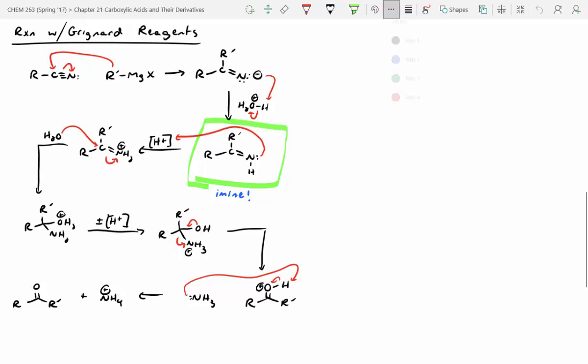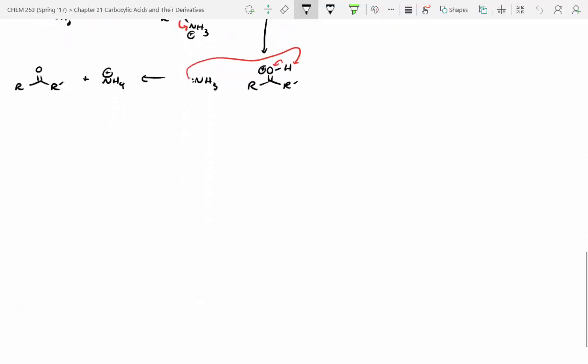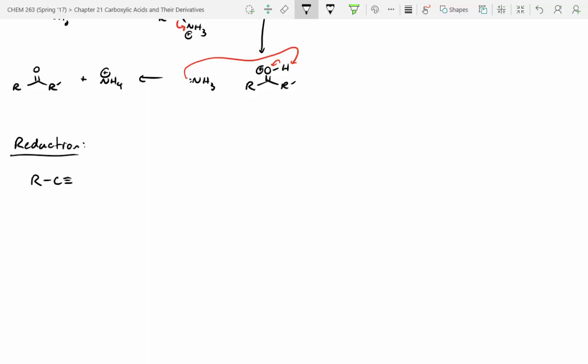There's one very last one, and this is the reduction chemistry of nitriles. All right, so let's say we've got a simple nitrile and we treat it with LAH. You have to use this in an excess amount, similar to a carboxylic acid, and then you treat it with water after the fact.